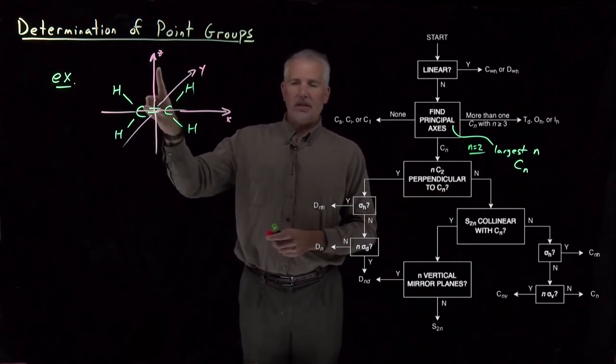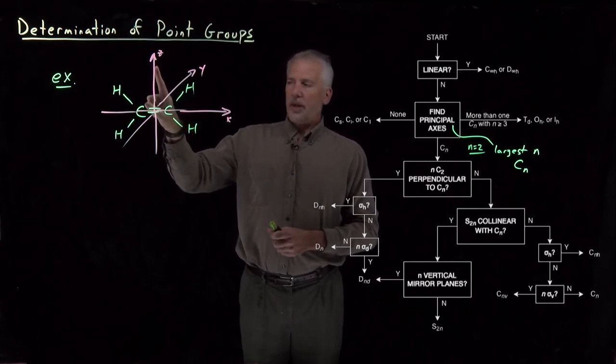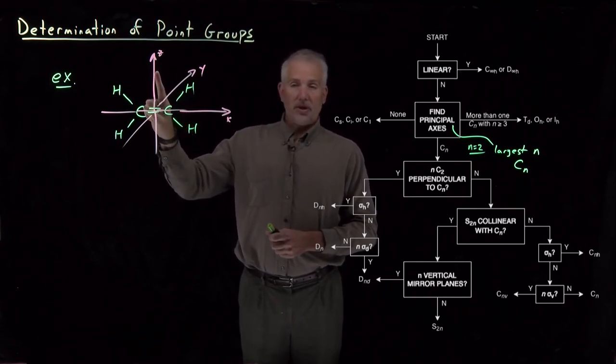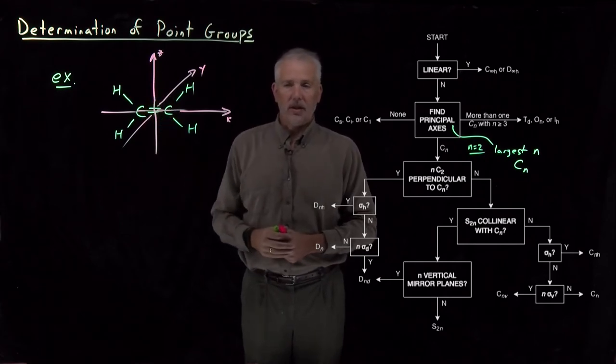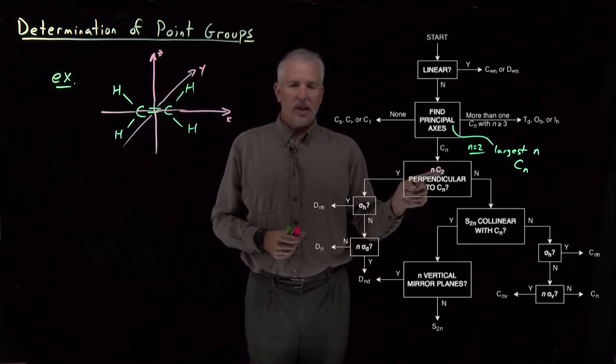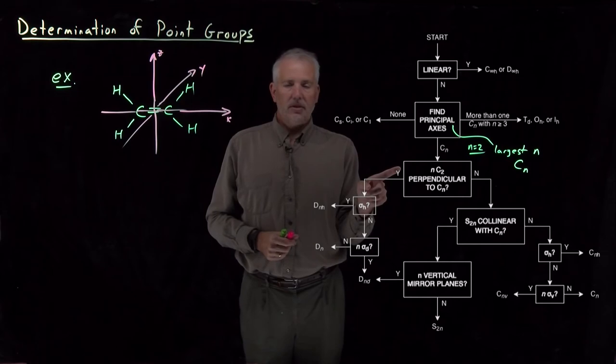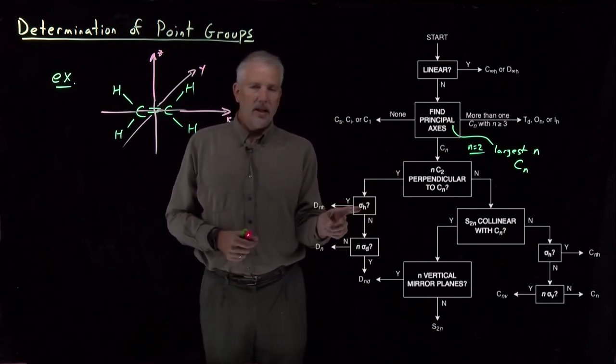Are there two additional C2s perpendicular to the one that we found? Yes, that's exactly what we saw. If our principle axis is the z-axis, let's say, that C2 axis, are there two additional C2s perpendicular? Sure, that x-axis and the y-axis, as we've seen, are C2 axes, and they're perpendicular to the one that we're calling the principle axis. So yes, we do have two additional C2s. So we follow this line.